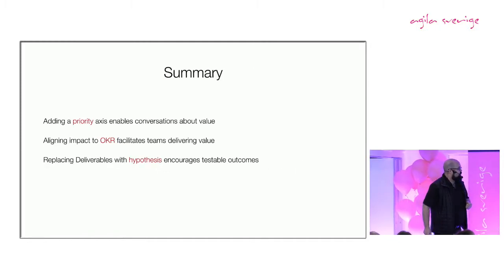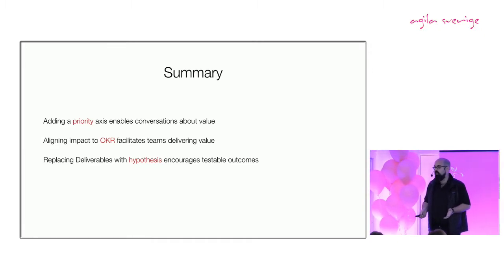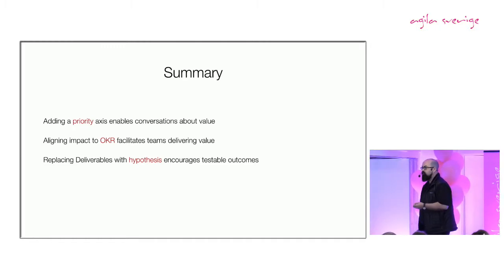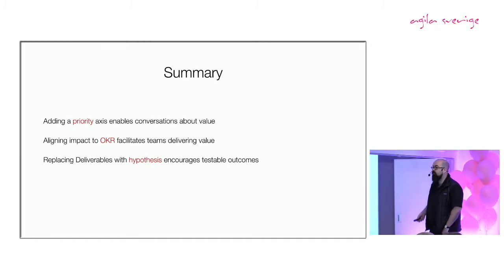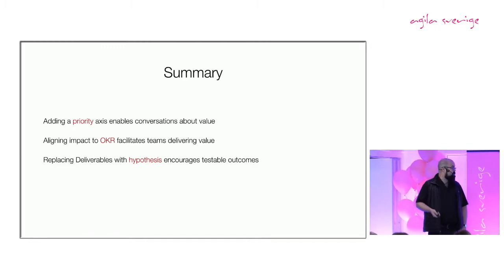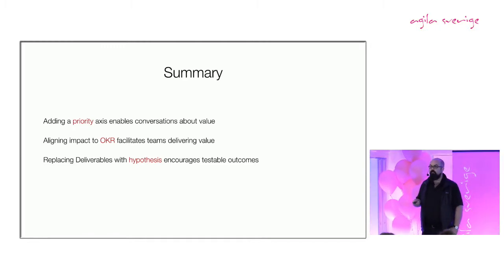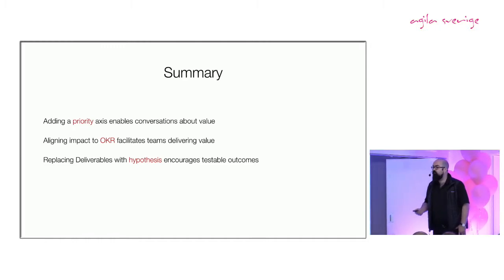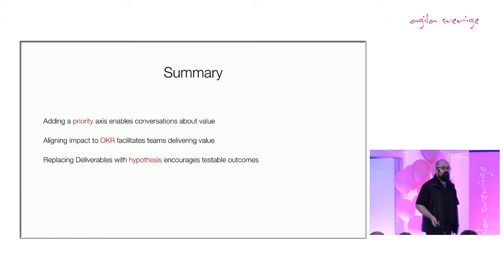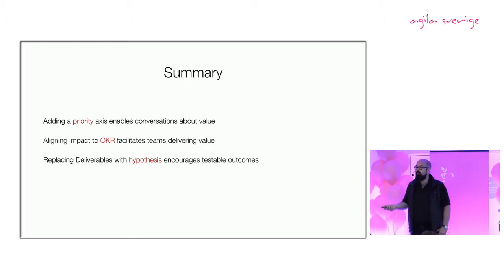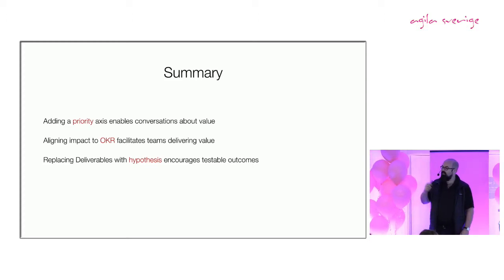So quick summary: I would suggest if you've done impact maps before, have a go by adding a priority axis when you're talking to customers, when you're talking to stakeholders. See if that helps the conversations go through. Try aligning the impacts you're talking about to the team's OKRs that you're working with. And instead of talking about deliverables, try talking about hypotheses and experiments and see if that makes conversations easier with the business around how you can pivot as you go through. Thank you very much.